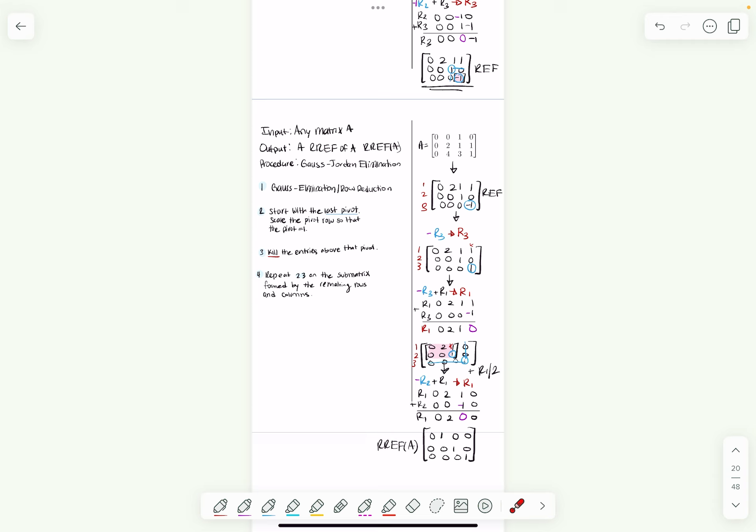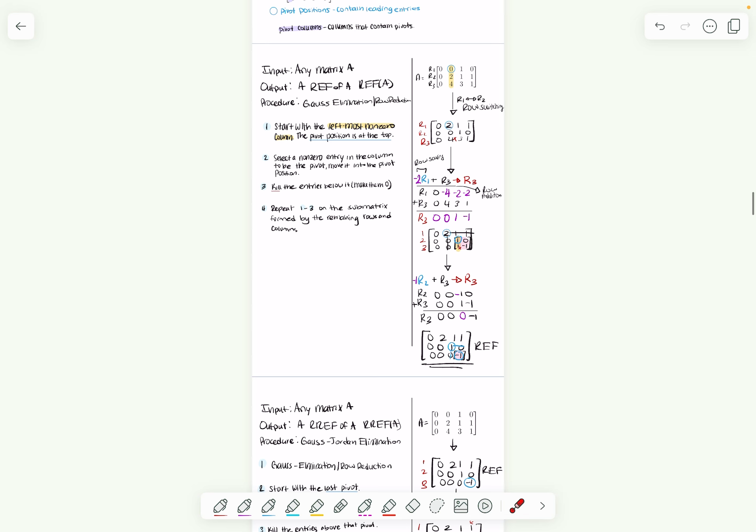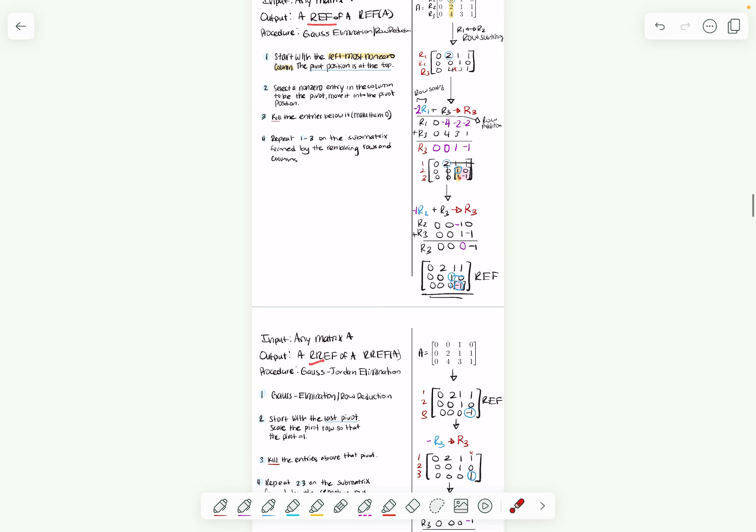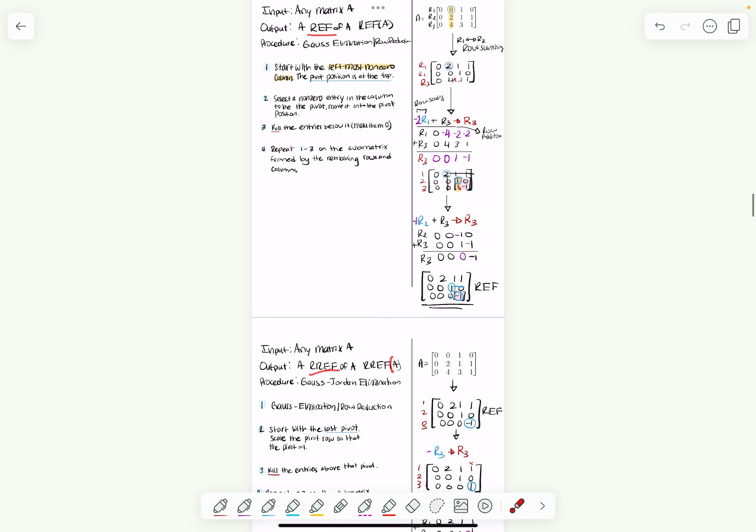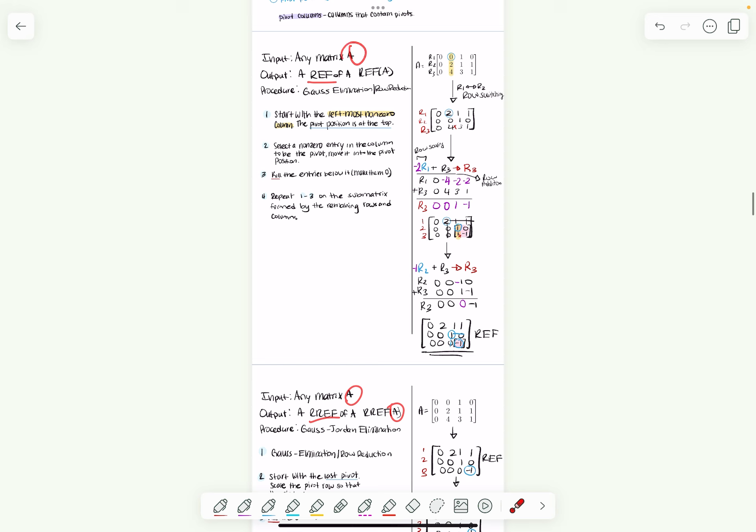Before we move on, I wanted to make a clarification. Notice that anytime we're performing a procedure to either get our matrix in row echelon form or reduced row echelon form, we're performing it on matrix A. And that matrix A is just your coefficient matrix—it's not A of b, that's your augmented matrix.